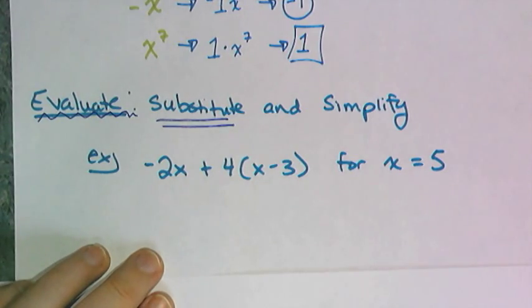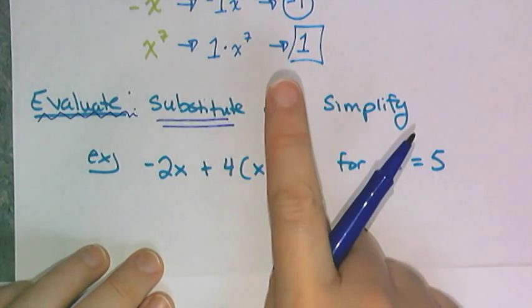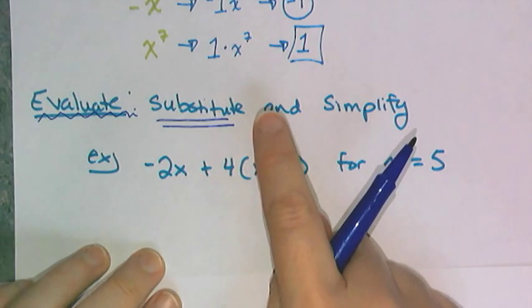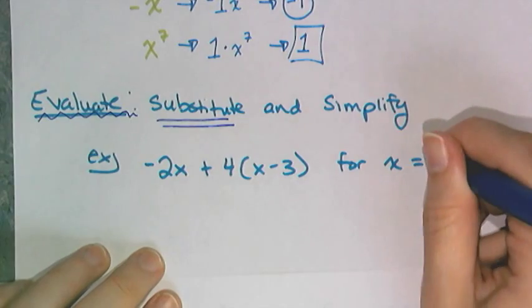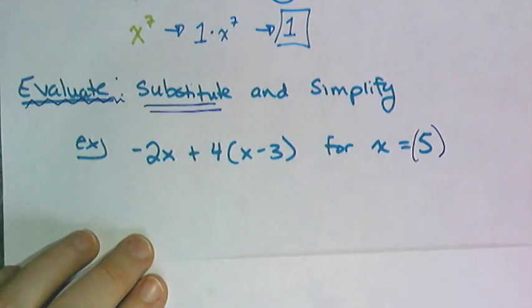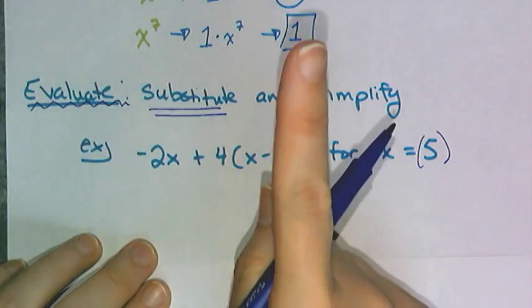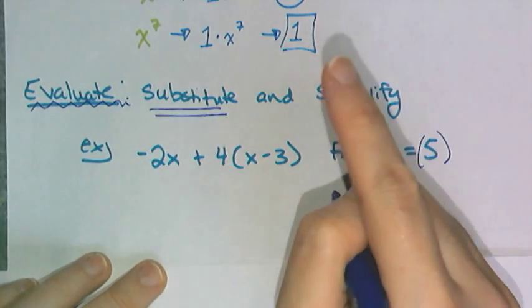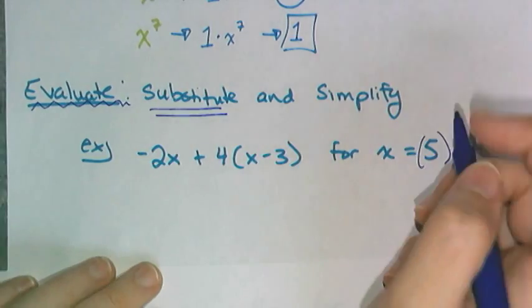The thing that you have to be super careful with is the substitution part. If you want to get this right every single time, then what you are going to do is you are going to substitute in the number into the expression inside of parentheses. And I'll show you why with the second example. This one's not so important for the parentheses, but fractions and negatives, super important that you use parentheses.